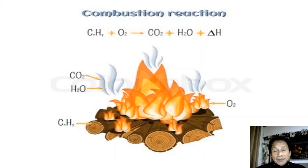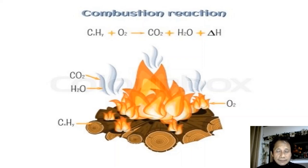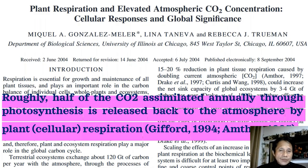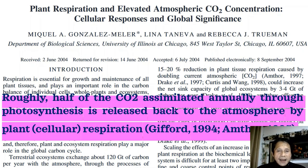But by nature's equilibrium, there is a net positive amount of oxygen released by plants in the rainforest and terrestrial plants, equivalent to 20%. In 1994 and 1995, Gifford and Amstor respectively found that about 50% — half — of the CO2 assimilated annually through photosynthesis is released back to the atmosphere by plant cellular respiration.